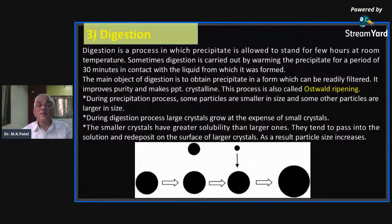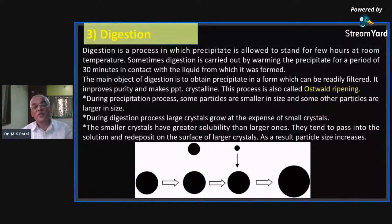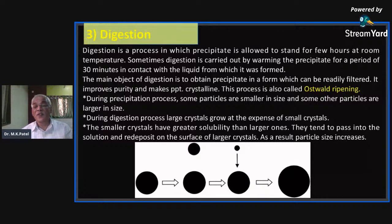The third step is digestion, a process where we keep the solution for a few hours at room temperature, and sometimes warm it to a high temperature for about 30 minutes to one hour. The main objective of digestion is to obtain the precipitate in an insoluble but recoverable form. This type of process is known as Ostwald ripening — heating the solution makes the precipitate isolable and ready for the next step.